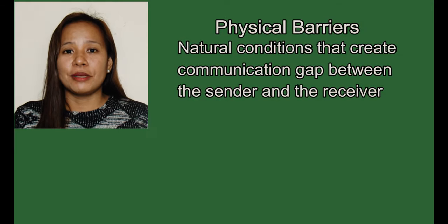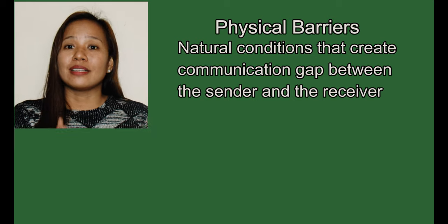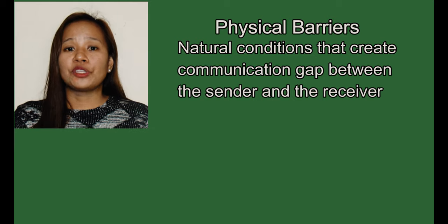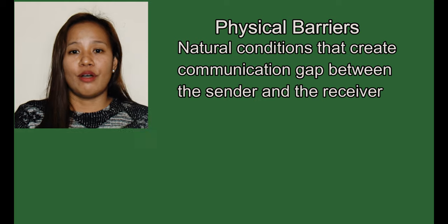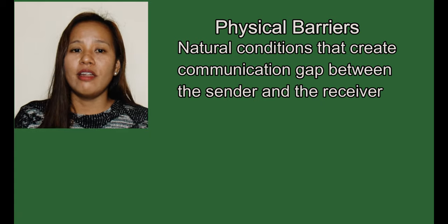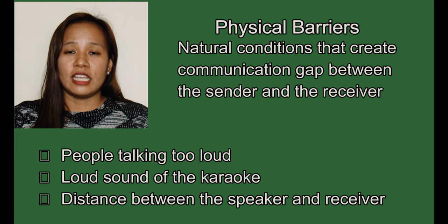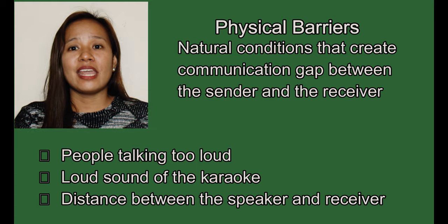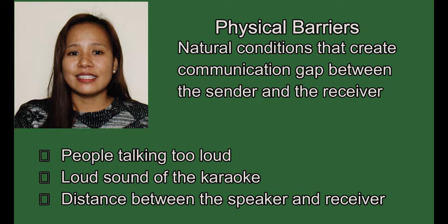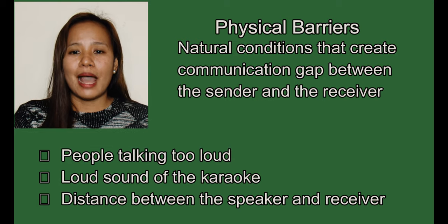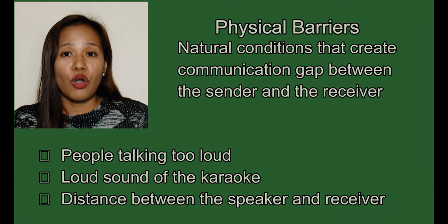This could be due to the different barriers to communication. The first barrier is the physical barriers. These are the natural and environmental conditions that create a communication gap between the sender and the receiver — disturbances external to both speaker and listener that hamper the physical transmission of the message. Examples include people talking too loud, loud karaoke, a loud neighbor's party, the irritating hum of an air conditioner or electric fan, and the distance between speaker and listener.